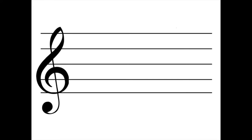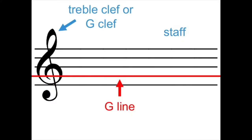The treble staff is represented by the treble clef, which you can see on the screen. The treble clef has been modified over the years from the letter G, and as you can see, it is wrapped around the second line of the treble staff, which is line G.